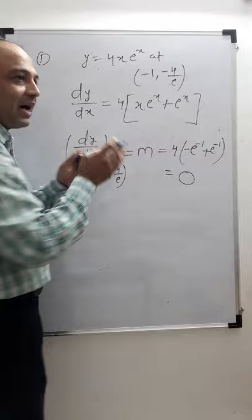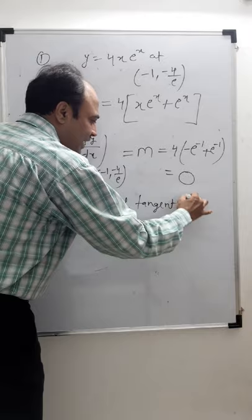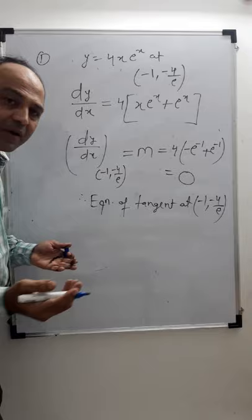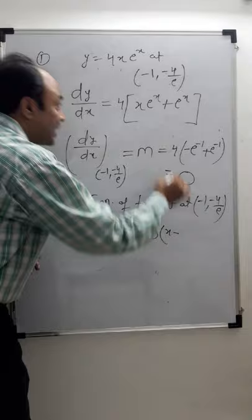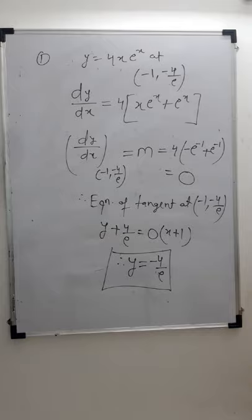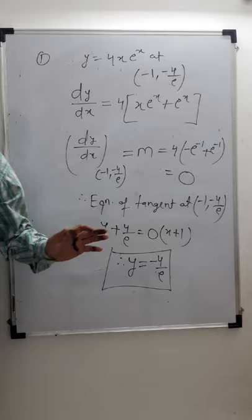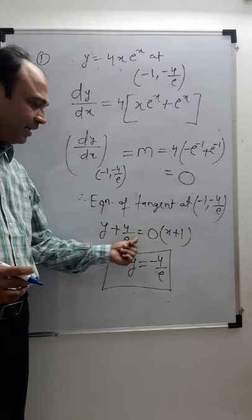Since dy/dx = 0, slope m = 0. Using point-slope form y − y₁ = m(x − x₁), with y₁ = −4/e and m = 0, we get y − (−4/e) = 0, therefore y = −4/e is the equation of the tangent at the point (−1, −4/e).